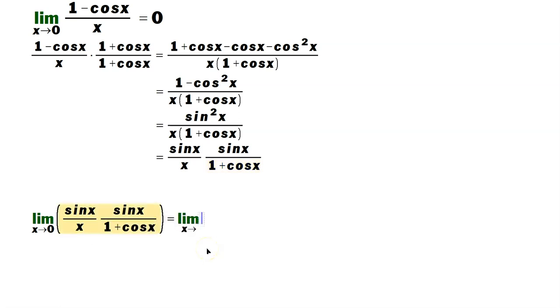So limit as x approaches 0 of sine x over x, and then the limit as x approaches 0 of sine x over 1 plus cosine x.